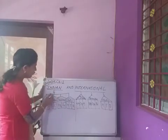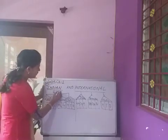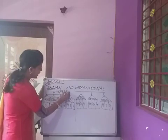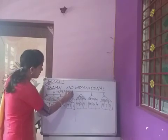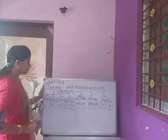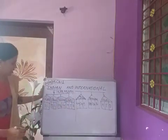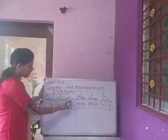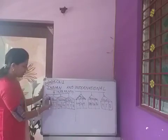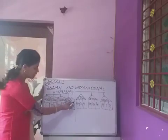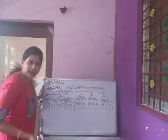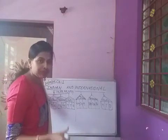These 4 periods are for a 9-digit number: 99 crore, 99 lakh, 99 thousand, 999. So for this, the periods are ones, thousand, lakh, and crore. In ones, there are 3 places. I have explained about the house and the room — ones, 10, 100: 3 rooms, 3 places.